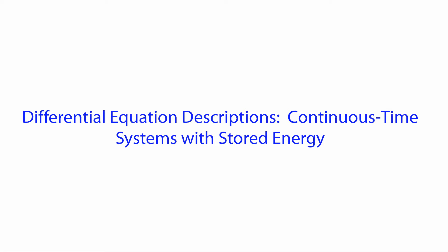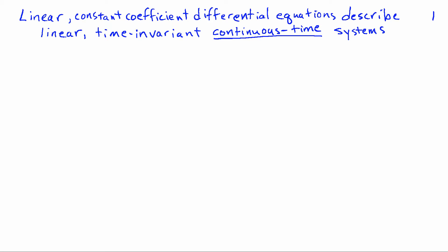Linear time-invariant systems that operate on continuous time signals can be described using differential equations. The advantage of a differential equation description is that it can account for the presence of stored energy at the time an input is applied to the system. The type of differential equation we're going to look at is a linear constant coefficient differential equation, and this corresponds to a linear time-invariant continuous time system.